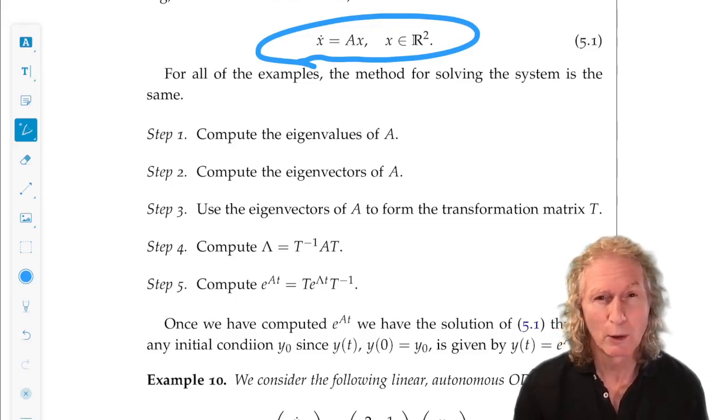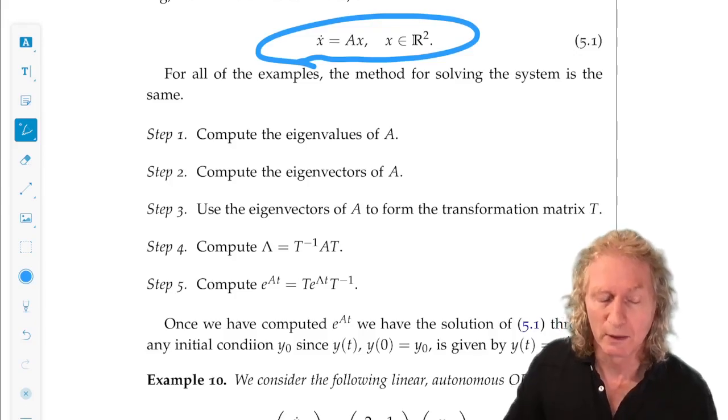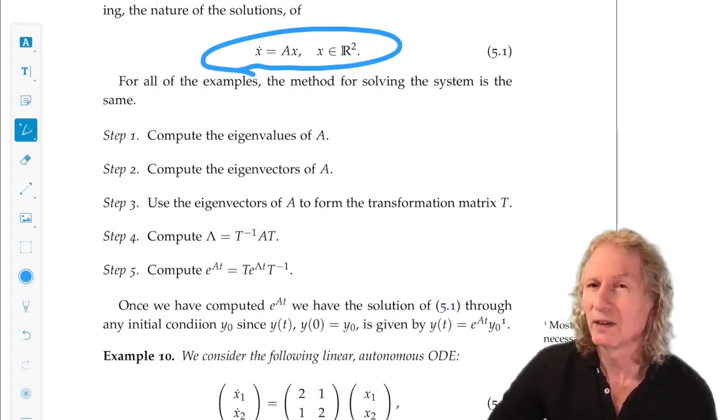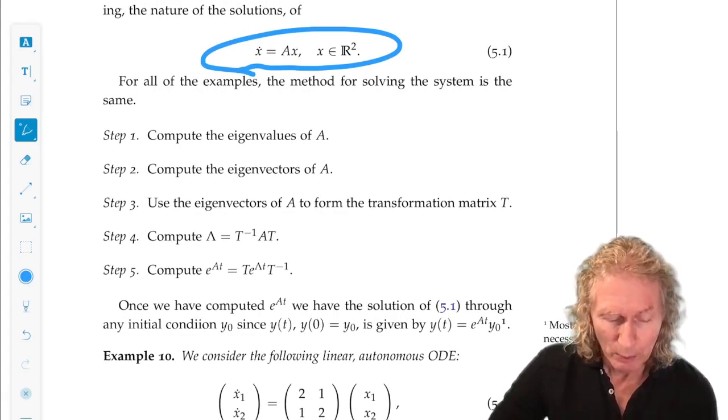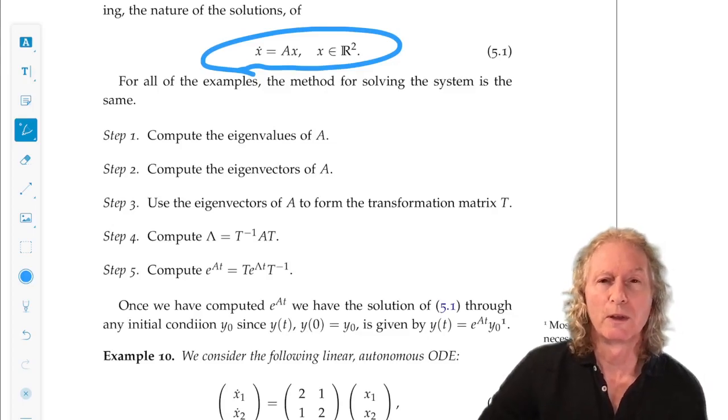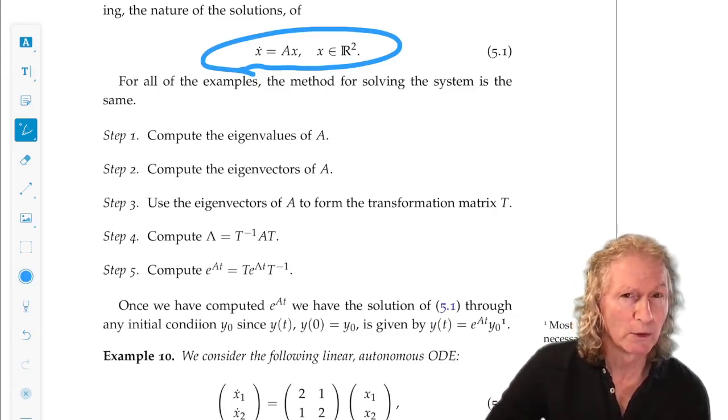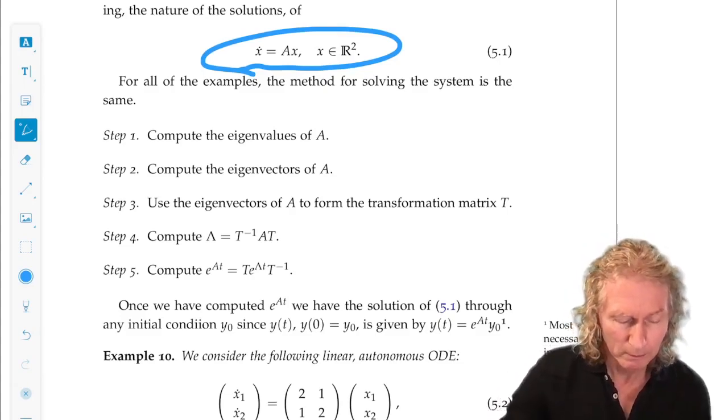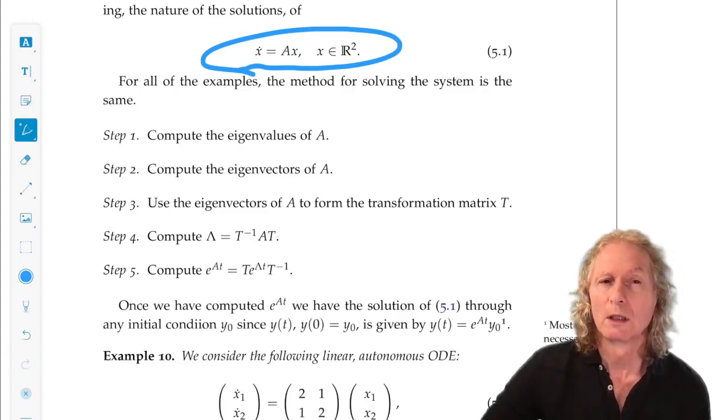Now, are we always going to be able to compute real eigenvectors? That's an issue that's coming up. Are we going to have enough eigenvectors? But, once we have these eigenvectors, we want to form the transformation matrix T. In T, the columns will be the eigenvectors, or in the complex case, it will be a little more involved. And then we compute lambda, which is T inverse A T.